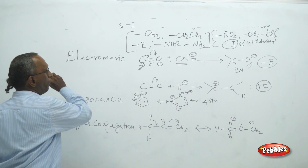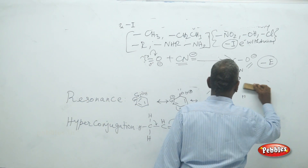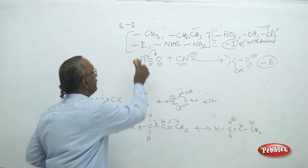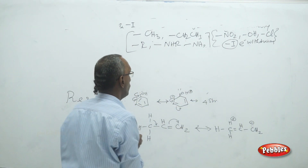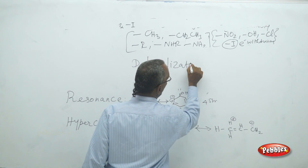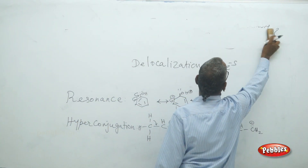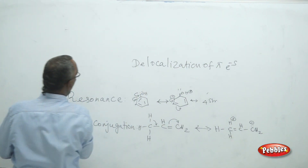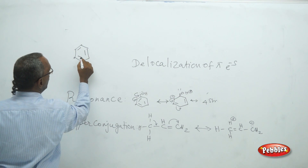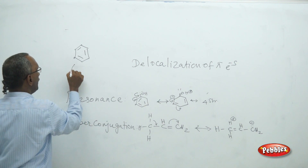The next important type of effect is the resonance effect. Resonance arises due to the delocalization of pi electrons — they are not fixed in position. In benzene, there are three double bonds (pi bonds), each containing two electrons, giving six pi electrons total. This can be represented as two structures where the pi electrons are positioned differently.